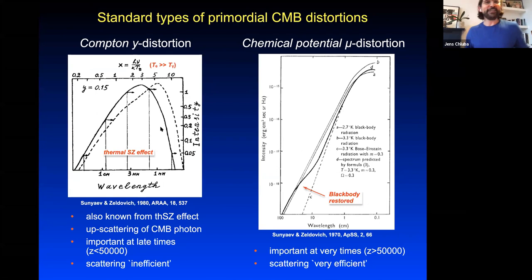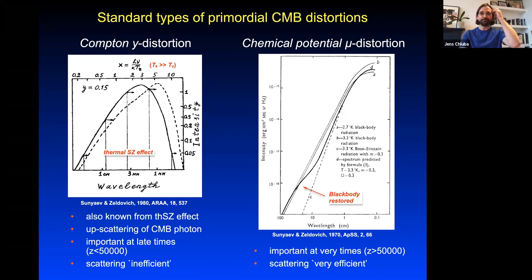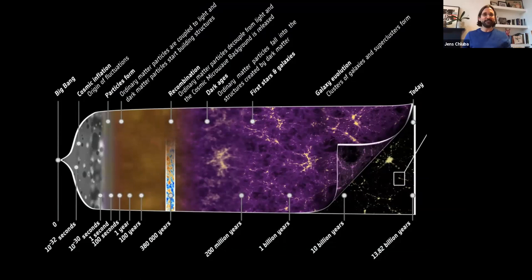At earlier, higher redshifts, there are many more photon-electron interactions, and electrons can equilibrate — producing the so-called chemical potential or mu-type distortion, which represents the equilibrium blackbody when number and energy density don't perfectly match. These two — y-type and mu-type — are the classical distortions. The mu-type distortion can only be created in the early universe. The universe expands and cools, with interesting things happening, including the recombination era where we start seeing CMB anisotropies.